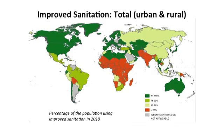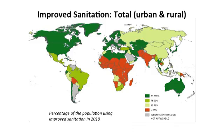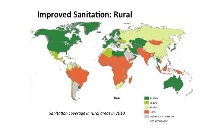Now let's turn to look at sanitation coverages globally. This first map shows both urban and rural, and this really shows a different picture than the water side. Globally, coverage levels for improved sanitation are a lot lower than for water, meaning many households that have improved water services don't have improved sanitation services. South Asia jumps out as a sanitation hotspot, and sub-Saharan Africa is also a hotspot for sanitation. Looking at rural coverage for improved sanitation, Latin America and Southeast Asia are added to sub-Saharan Africa and South Asia as problem areas.